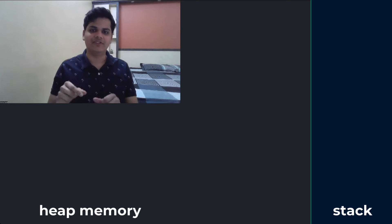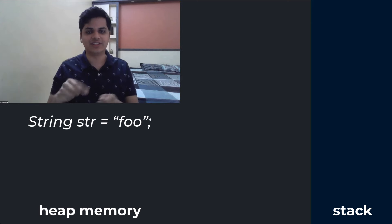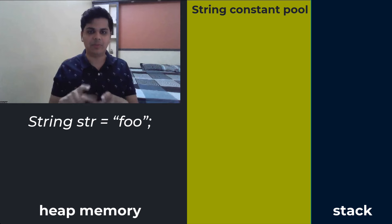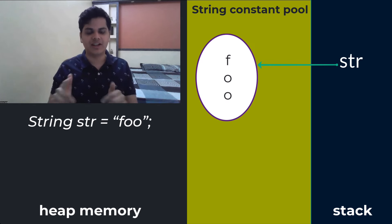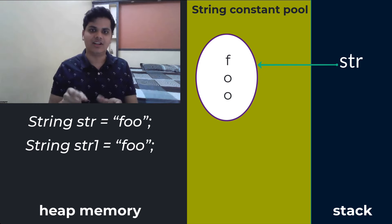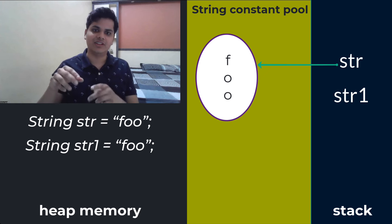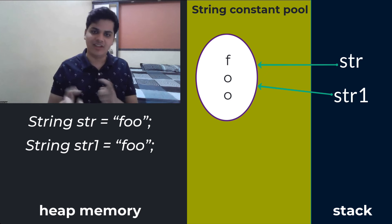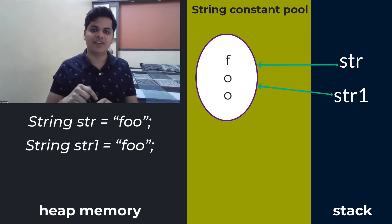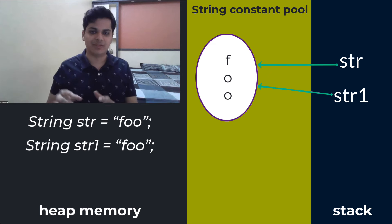When we initialize a string in literal form without using the new keyword, the String Constant Pool — which is a space within the heap memory itself — creates an object for it. The next time we try to create an object with the same string literal, it does not create a new object. Instead, it assigns the address of that existing object to the new reference variable, because strings are immutable so they will never change. For example, if we have five string variables all initializing 'Abhilash', there is no need to create five objects — they can all refer to the same object in the SCP.